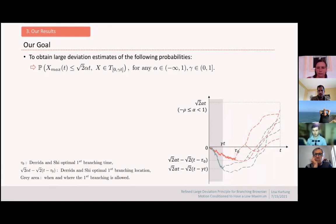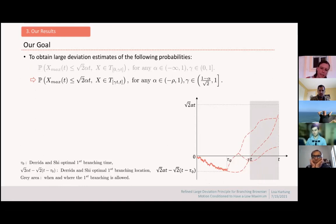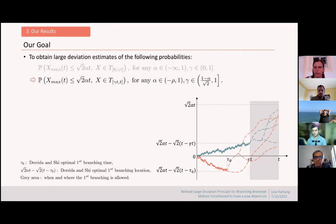Of course, if the first branching time is allowed to be later, we can just choose the optimal tau_0. It's more interesting to ask: what if we force the BBM to branch very late, between some gamma*t and t, in this shaded gray area? Can we then say something about the optimal branching strategy? We would then need to look at the suboptimal path instead of the optimal one and see which of the bluish paths is actually the best.